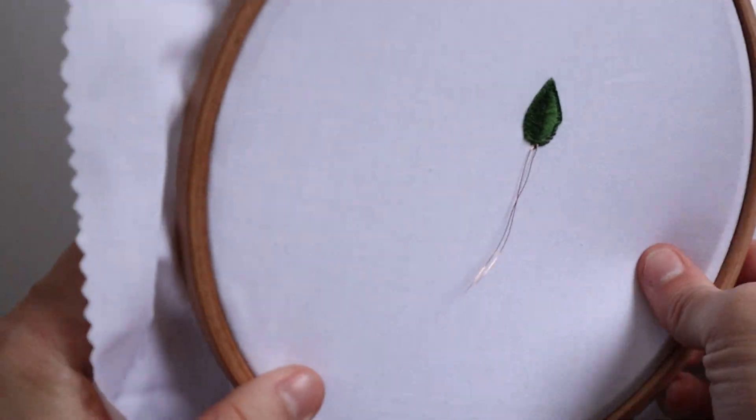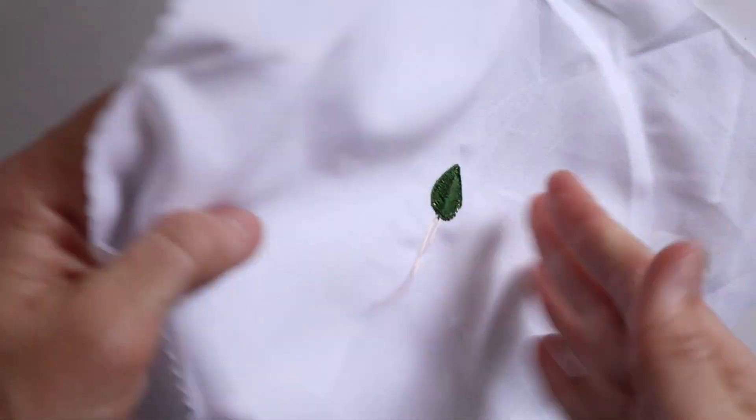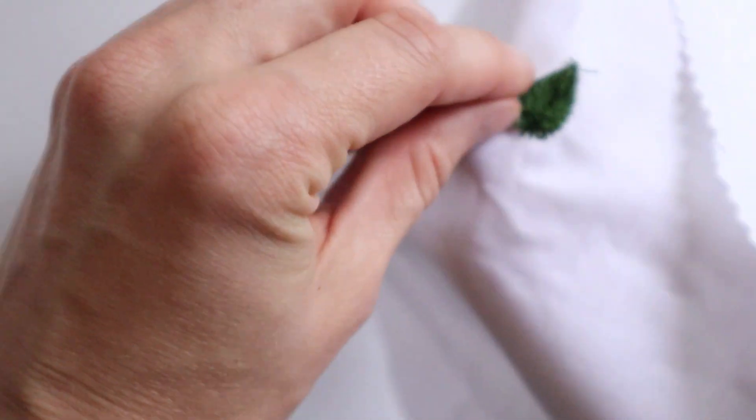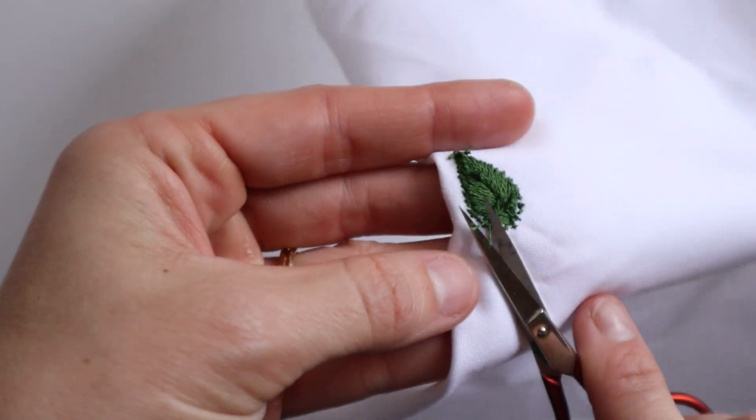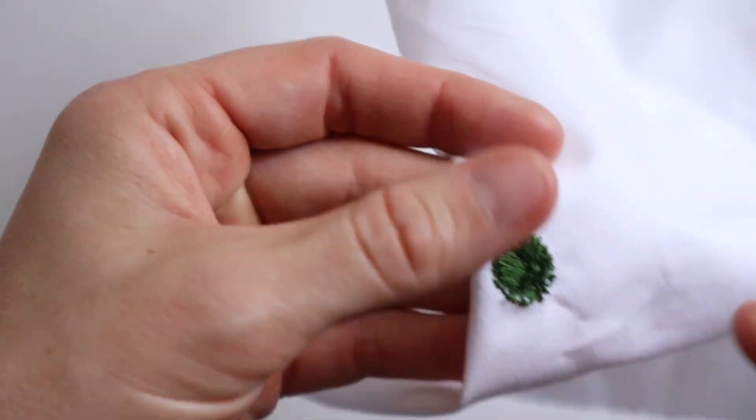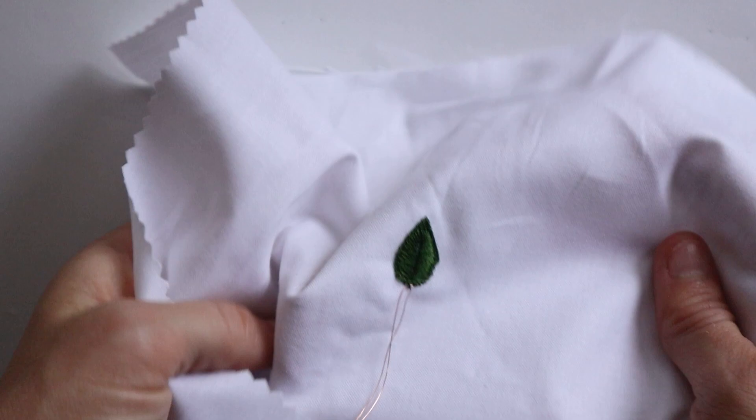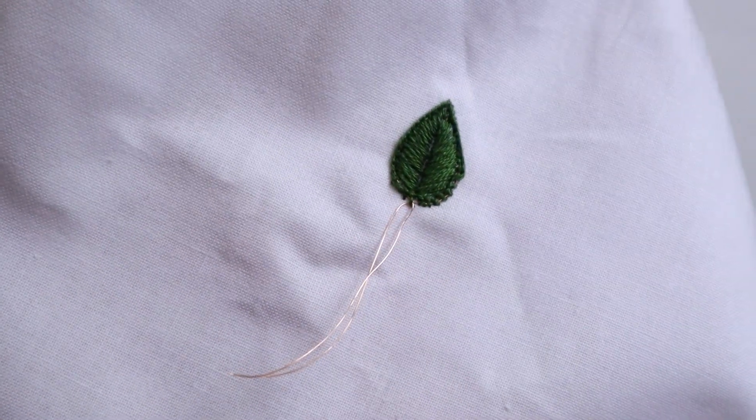All right, I'm going to take my fabric out of the hoop here. You want to make sure that you have secured the knots on the back and kind of trim. If you have any excess stuff, kind of trim that. You might end up trimming some of it when you cut this, but you just don't want it showing from the back. This is what it looks like on the fabric.